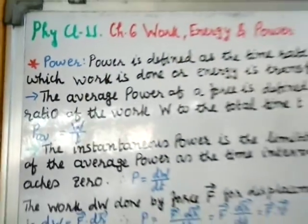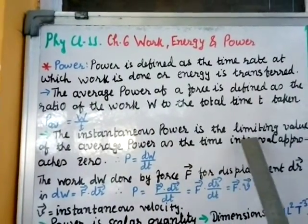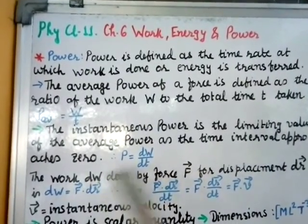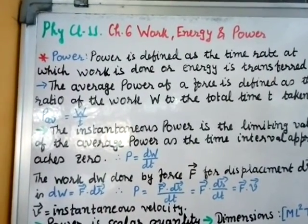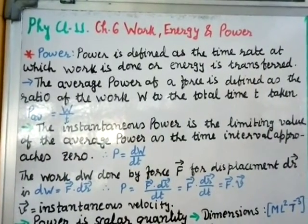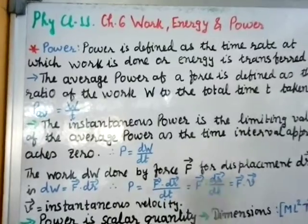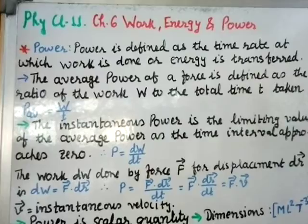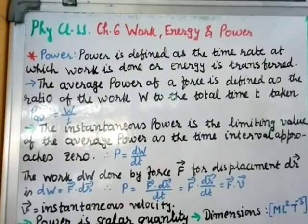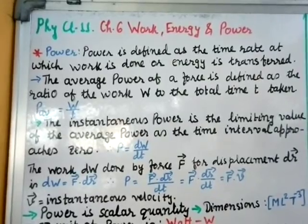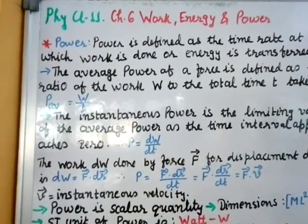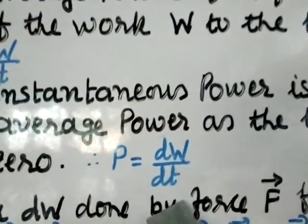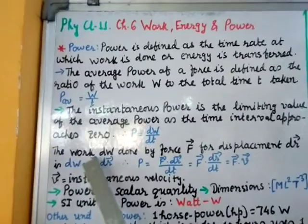The instantaneous power is the limiting value of the average power as the time interval approaches zero. Taking the limit as delta t tends to zero, the average power converts into instantaneous power. In calculus notation, instantaneous power P equals dW/dt.